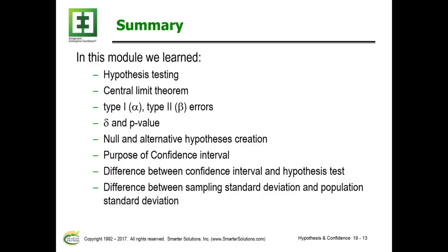In summary, we talked about hypothesis testing, the central limit theorem, and alpha and beta errors. Delta gets involved with the beta value — delta defines how close is close, for example, plus or minus ten-thousandths of an inch. We covered the null and alternative hypothesis, the purpose of confidence intervals, the difference between confidence intervals and hypothesis testing, and the difference between sampling standard deviation and population standard deviation.